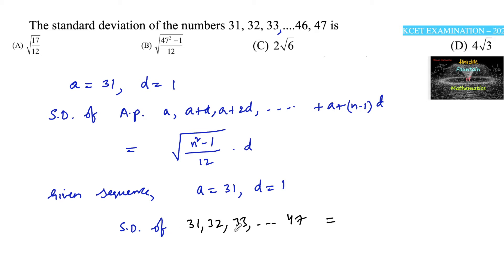So here we can consider 47 is the last term. 47 is equal to a plus (n minus 1) times d to find the number of terms. 47 is equal to a is 31 plus (n minus 1) into common difference is 1.